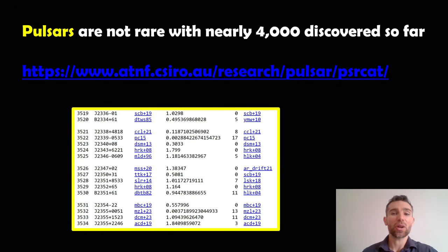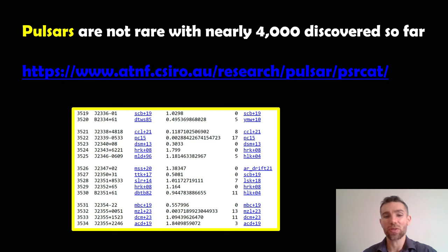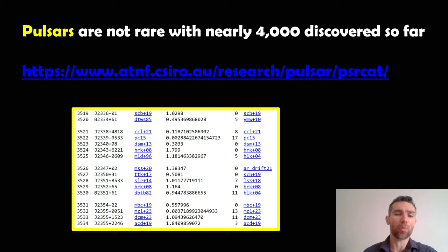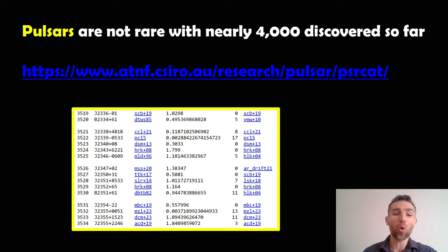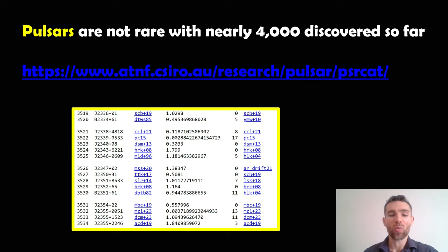Pulsars themselves are not particularly rare. In fact, around 4,000 or so have been discovered so far. This is just a snapshot of a pulsar catalog — the link is there if you want to have a look yourself. All different sorts of pulsars with various catalog names depending on how they were formed. Pulsars — they're not rare, basically, is the whole point here.